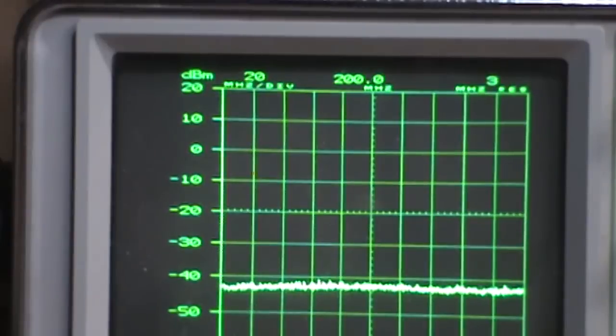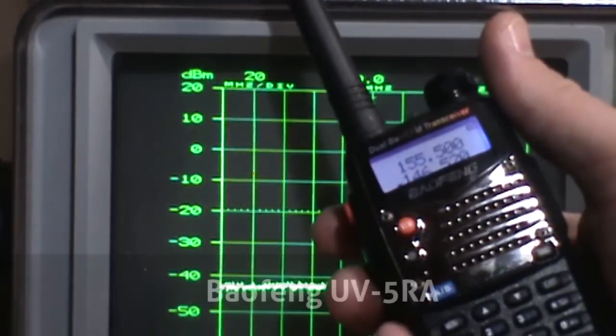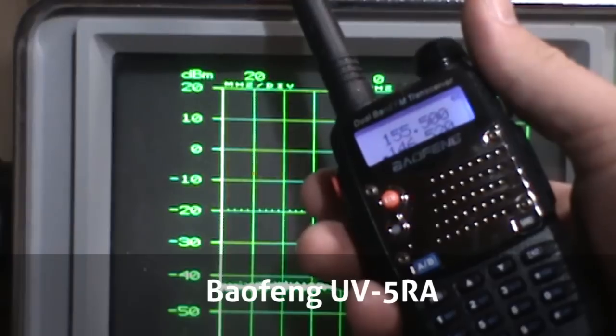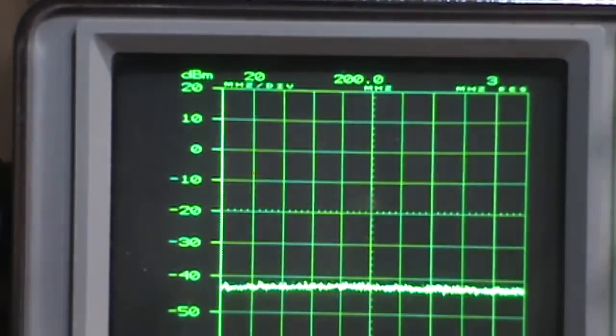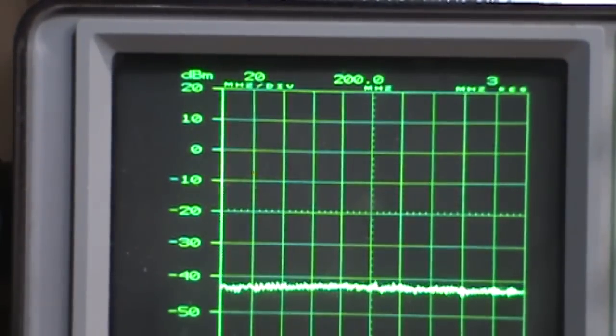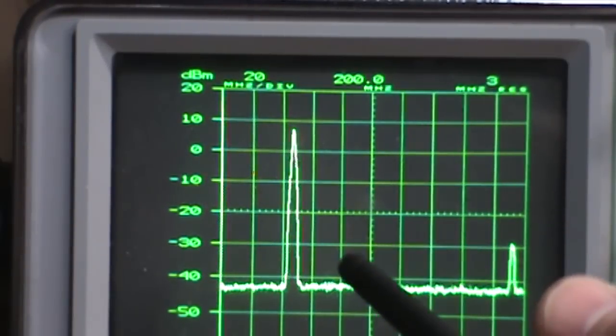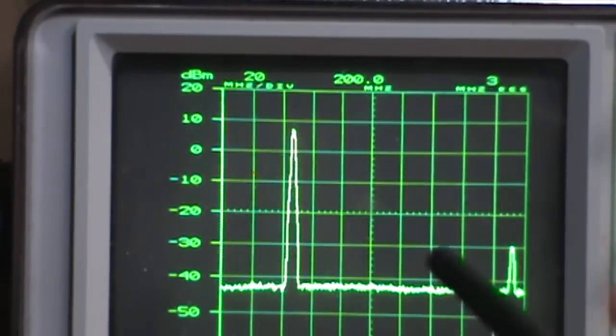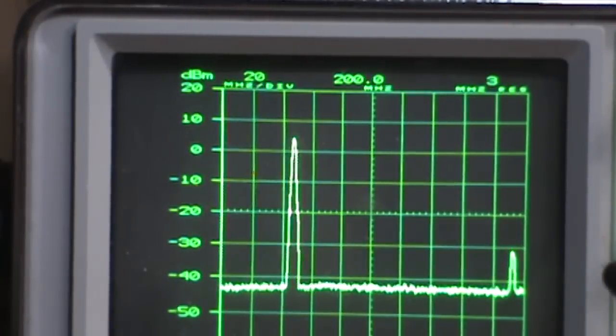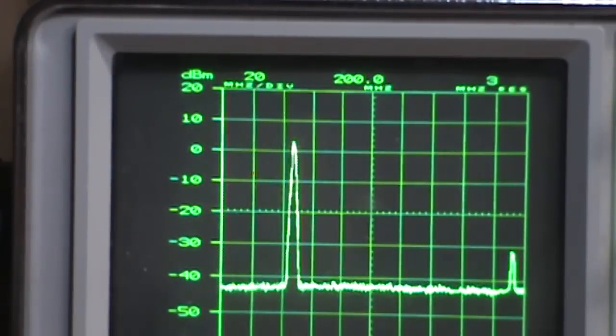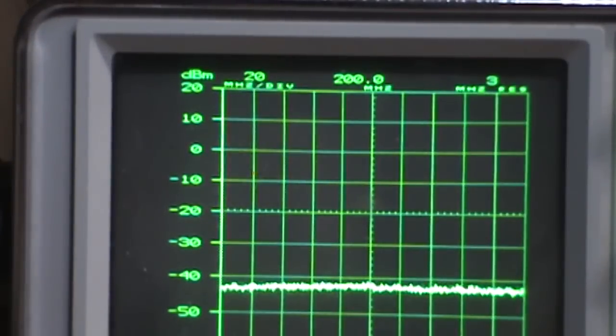So a little bit of a newer Baofeng, this is a UV5RA. I don't know what the difference is. From what I understand, it's usually always just firmware that they change, nothing serious. Wow, right there! And that's the problem with these radios. We'll take a look at the fundamental there is at about 8 dB, and then we have a spur on the second harmonic at negative 30 dB. So that one is going to be out of spec per FCC rules.